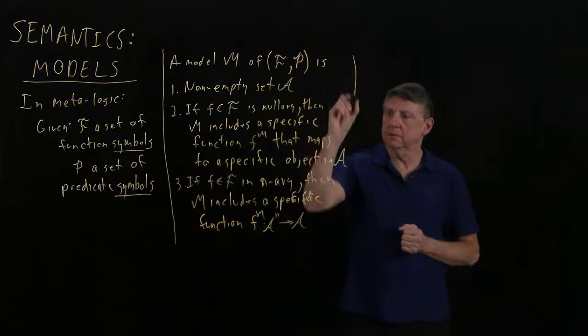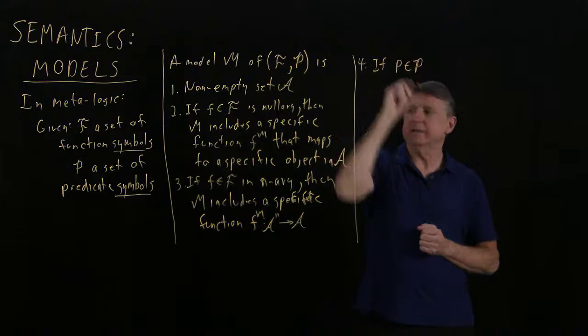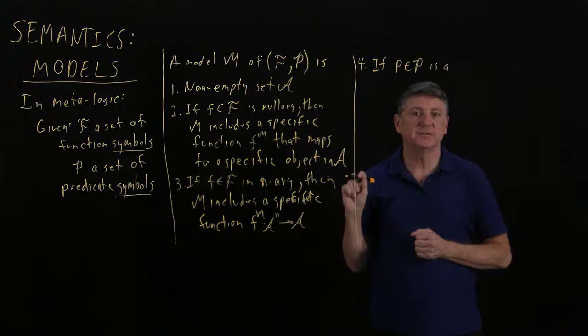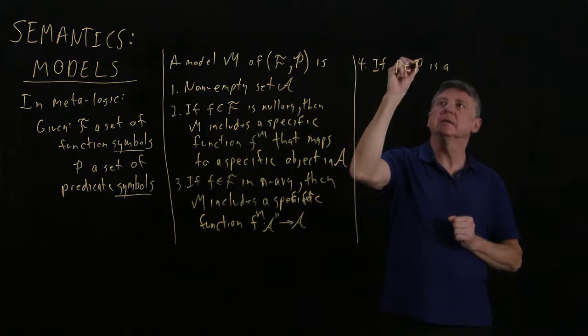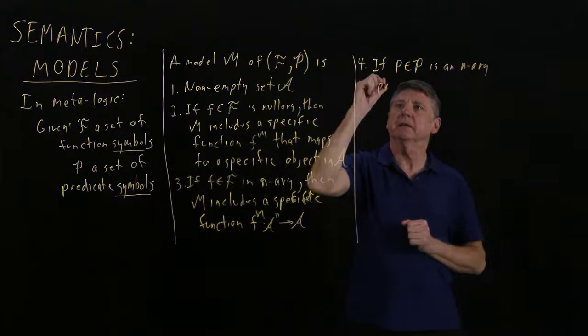And the fourth requirement is that if P in the set of predicates is a, and now we will be careful, we don't want a predicate to have zero arguments. We want it to have at least one. And so if P is a symbol in the predicate set, it's an n-ary predicate,